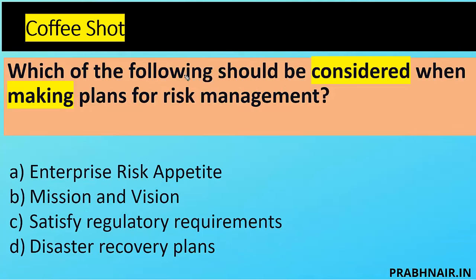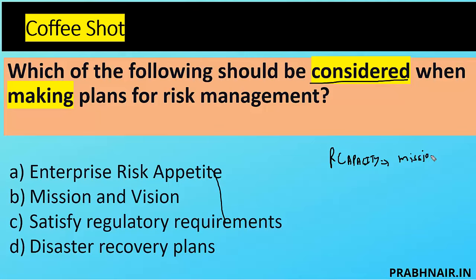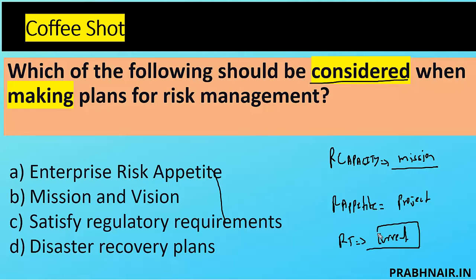Question two: which of the following should be considered when making a plan for risk management? We are in the process of making a risk management plan. Option A is risk appetite — the level of risk the organization is willing to accept to pursue the project. We have two concepts: risk capacity (maximum risk the organization can take) and risk appetite (level of risk willing to take for a particular project).